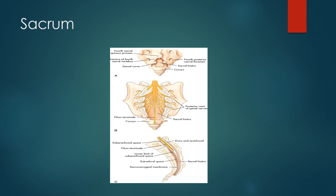The sacrum is unique in that it is largely fused. However, the S5 vertebra has incomplete laminae with no spinous processes, forming an opening known as the sacral hiatus. The sacral hiatus is covered by the sacrococcygeal membrane, which is an access point to the sacral canal for caudal anesthesia.